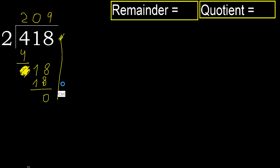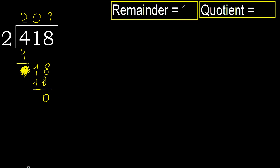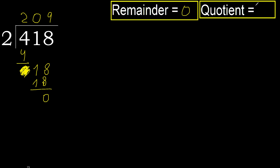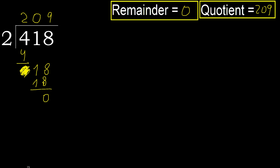That is not a number, therefore finish it. 418 divided by 2 is 209.